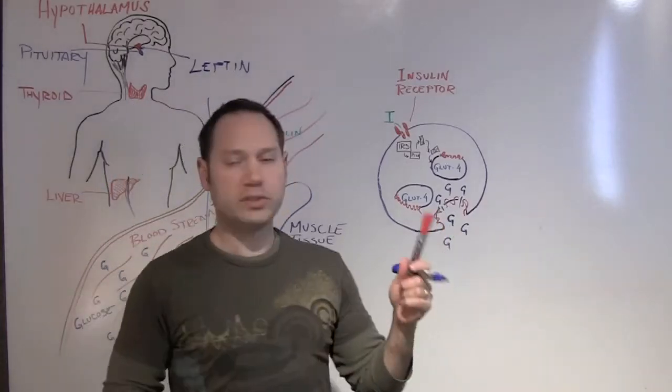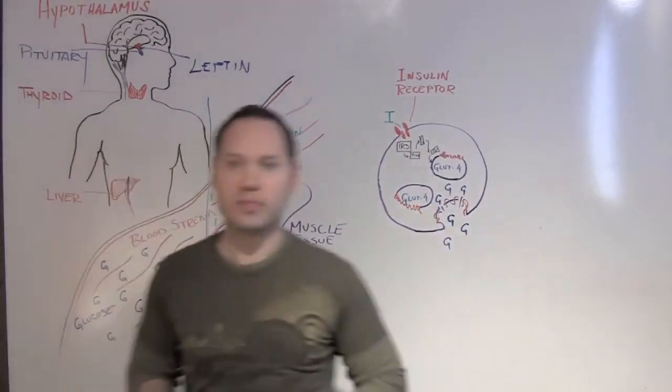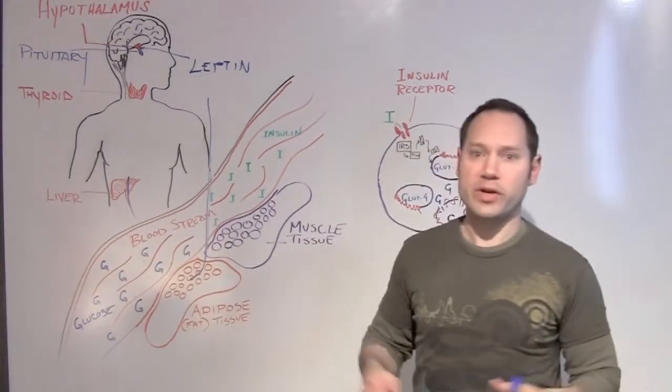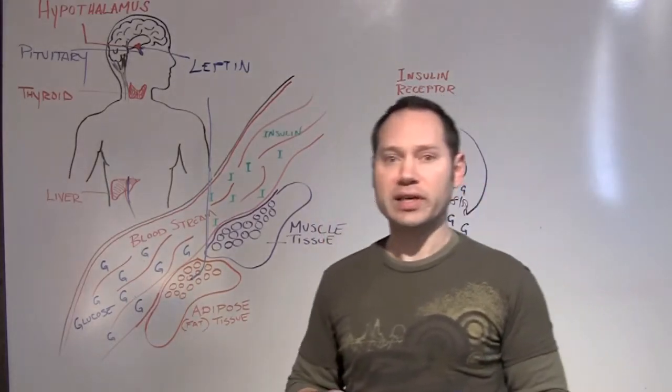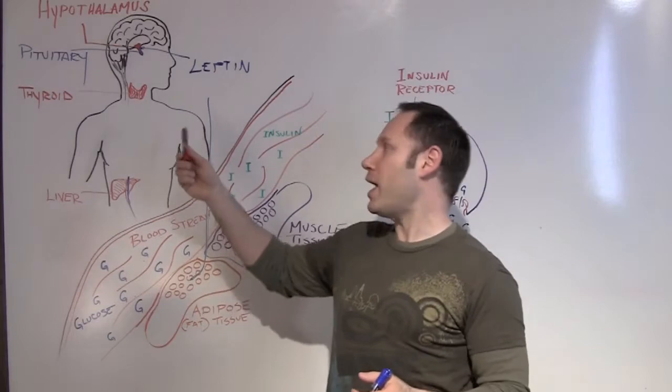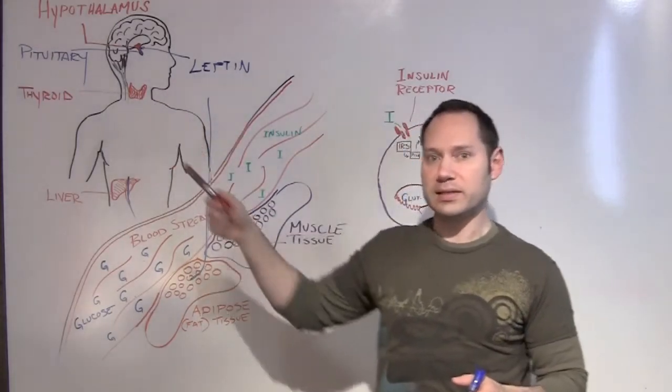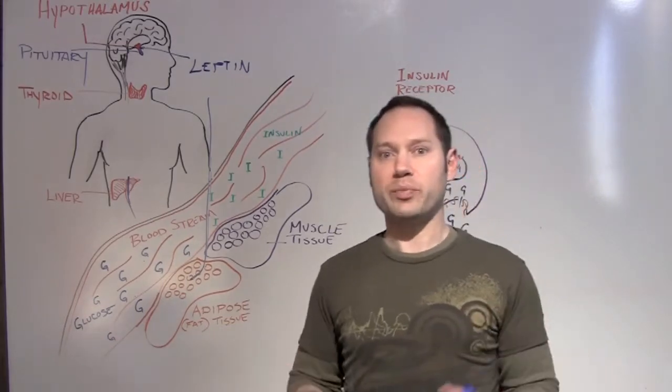But just like we can become insulin resistant, we can become leptin resistant. So how are some of the ways we can become leptin resistant? Well, very similar to how we can become insulin resistant, inflammation is one of the biggest factors. Inflammation does a really good job at blocking that signal to the brain, telling us that nutrient status is good, fat storage is good, and that we can stop eating for a while.